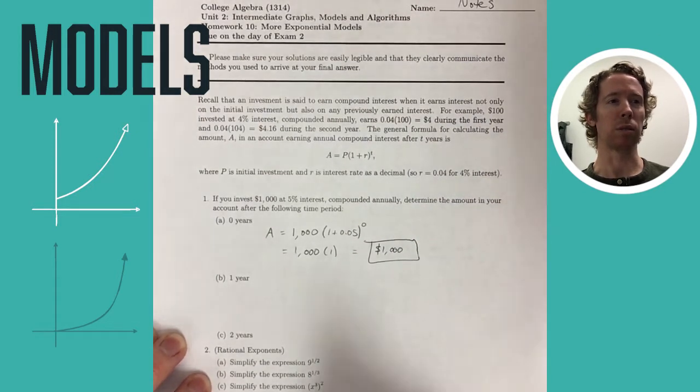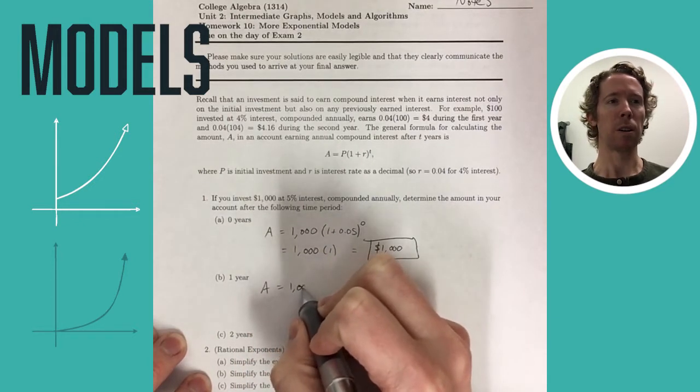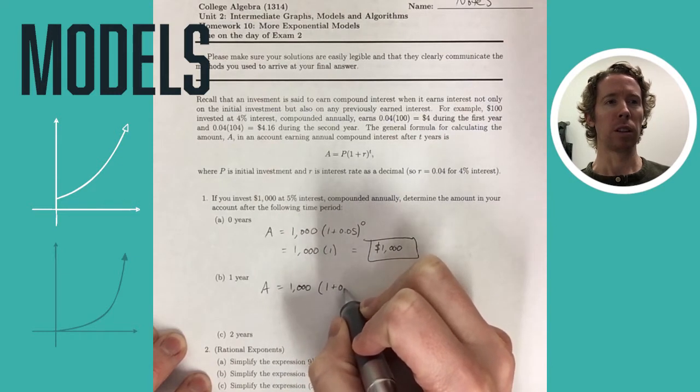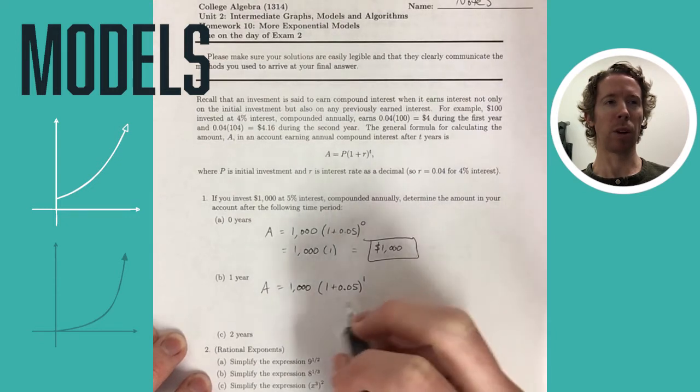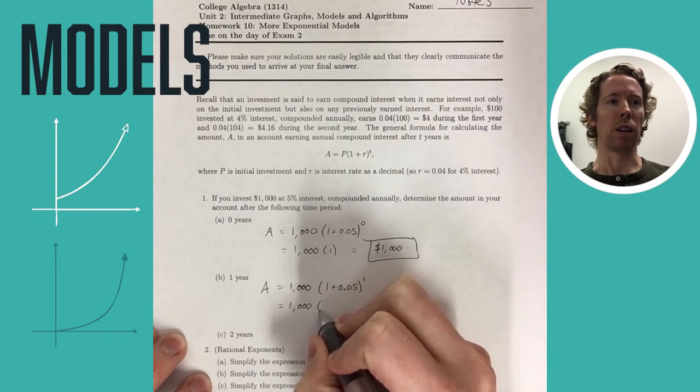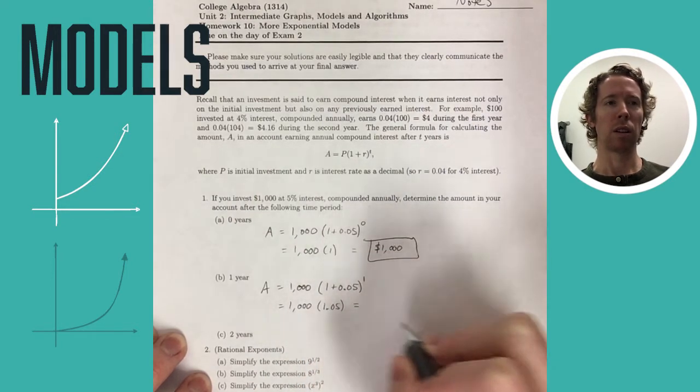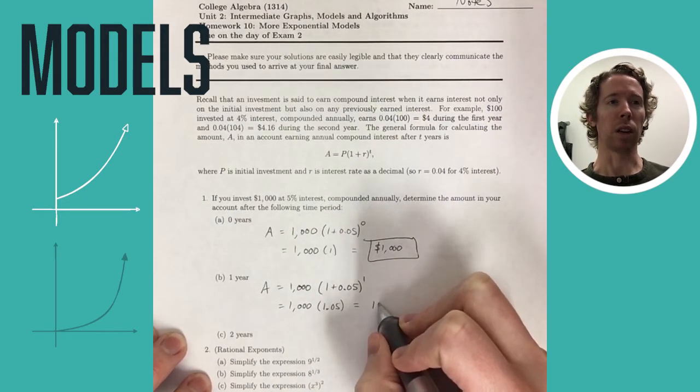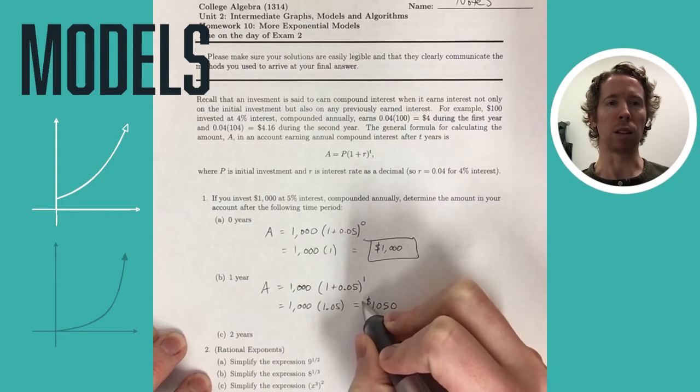After zero years, of course, you should just have still $1,000. That's the initial investment here. If you wait for one year, then you should be plugging in T equals one. The rate is .05 for 5%, and so you just add one plus 0.05, and then when you raise that to the first power, you don't change it at all. 1,000 times 1.05 is just going to move the decimal three places to the right.